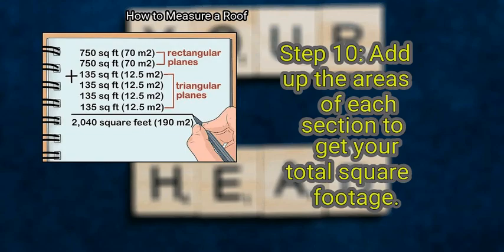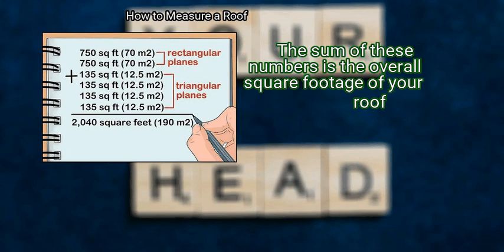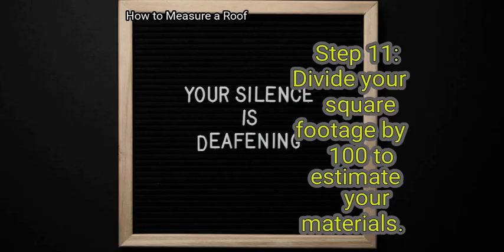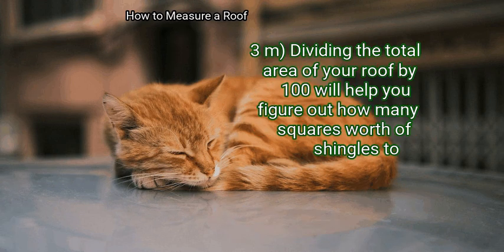Step 10: Add up the areas of each section to get your total square footage. Punch each of the area measurements into a calculator one by one — the sum is the overall square footage of your roof. Finally, divide your square footage by 100 to estimate your materials. Roofing materials are typically packaged in squares, each equivalent to 100 square feet (9.3 square meters). Dividing the total area by 100 will tell you how many squares worth of shingles you need.